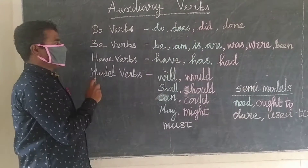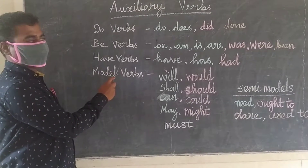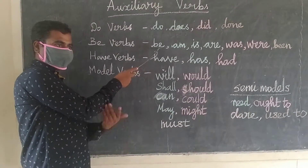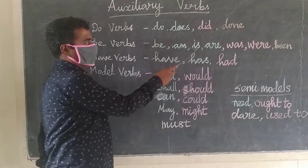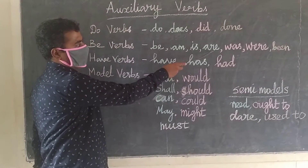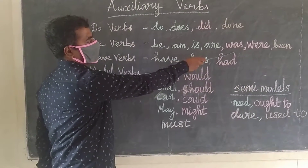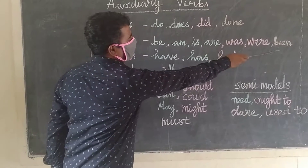Next, read the be forms: be, am, is, are, was, were.